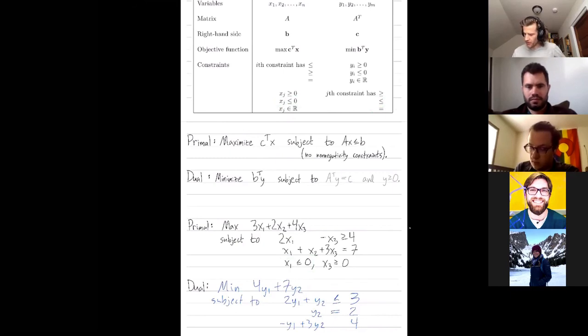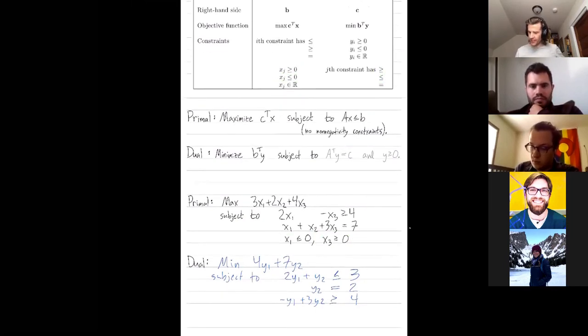And then my third variable is non-negative. So I look up here and that means that my third constraint should be greater than or equal to.